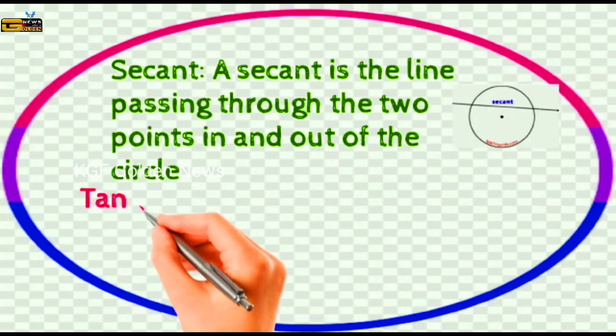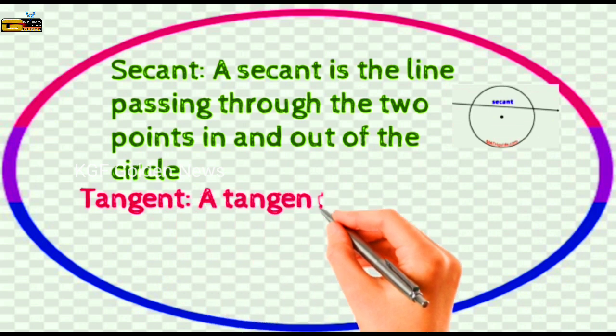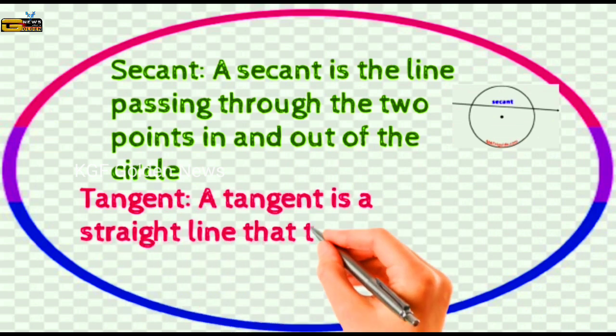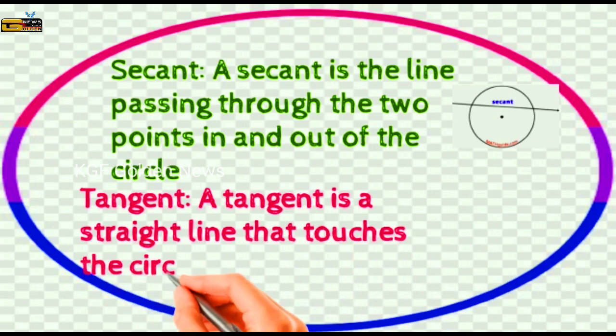Tangent: A tangent is a straight line that touches the circle at one point.